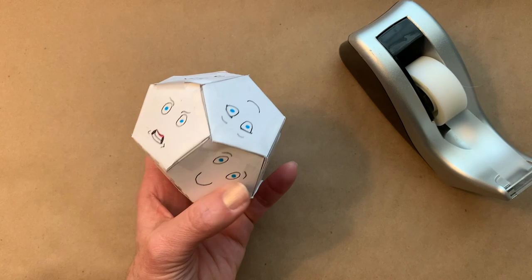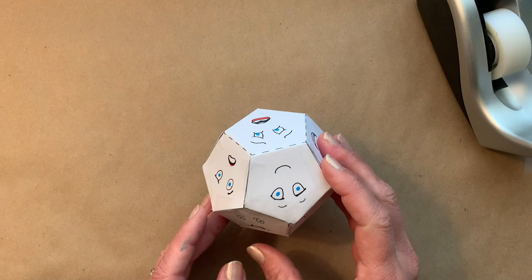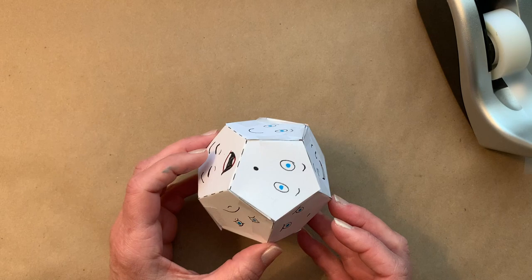He is all done, Mr. Dodecahedron. He's a mathematical shape with twelve faces. And if you can find a handsome beret to fit him, I'm sure he would be so happy to wear it. Unless it makes him angry, or disappointed, or sad, or frightened, or giddy, or frustrated.